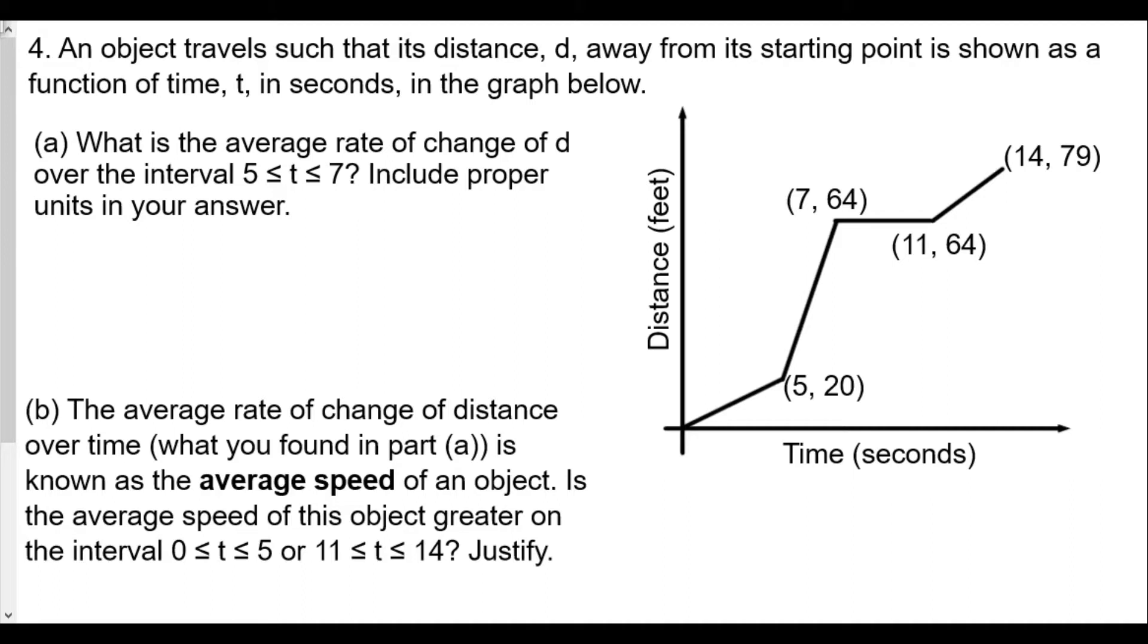For question number 4, an object travels such that its distance d away from the starting point is shown as a function of time t in seconds in the graph to the right. What is the average rate of change of d over the interval 5 is less than or equal to t is less than or equal to 7? Include proper units in your answer. When t is 5, our distance is 20. And when t is 7, our distance is 64.